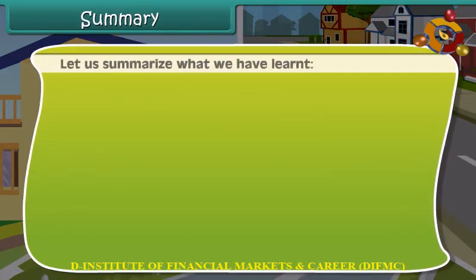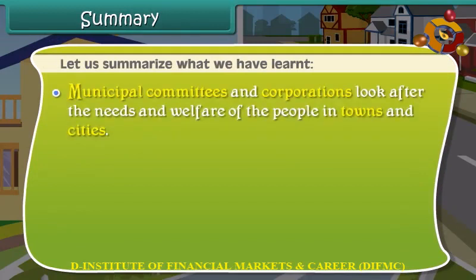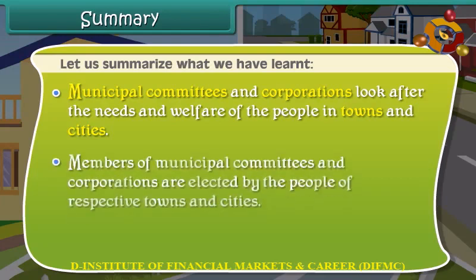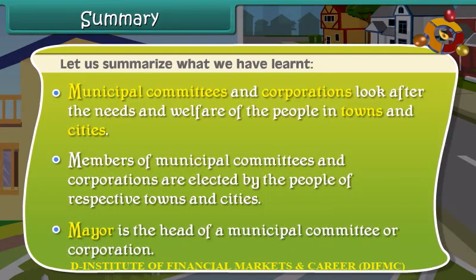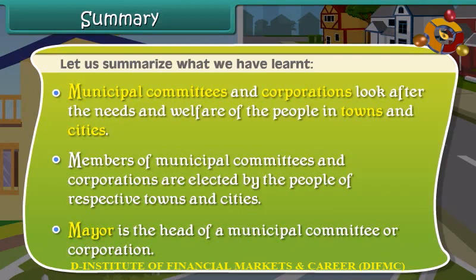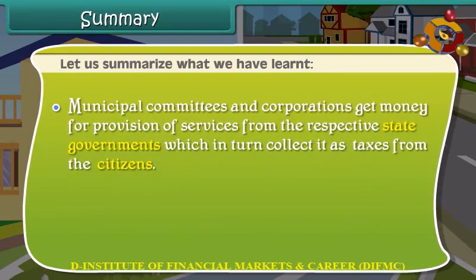Let us summarize what we have learned. Municipal committees and corporations look after the needs and welfare of the people in towns and cities. Members are elected by the people of respective towns and cities. The mayor is the head of a municipal committee or corporation. Municipal committees and corporations get money for provision of services from the respective state governments, which in turn collect it as taxes from the citizens.